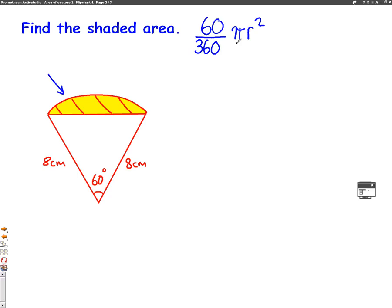Pi r squared, of course, is the area of a whole circle. So all we have to do now is put our numbers into this formula, and then we can work out the area of this whole outside bit.